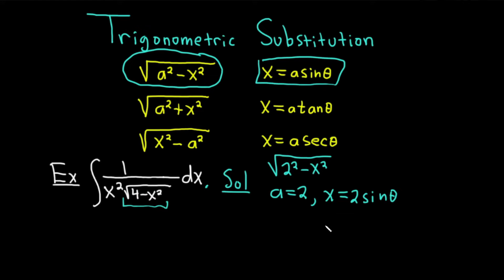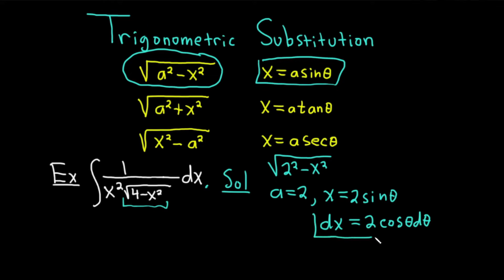Now we're going to differentiate both sides of this equation. We get dx equals 2 cosine theta d theta, since the derivative of sine is cosine. I'm going to put that in a box because we're going to need that.